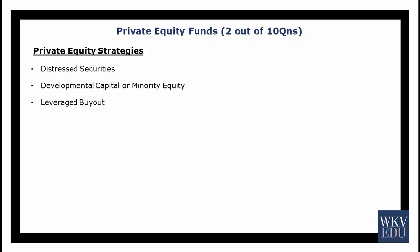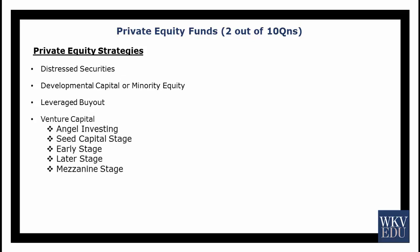Under venture capital, there are various stages of investment: angel investing, seed capital when the idea generates early funds, early-stage funds for developing and marketing, later-stage funds for commercial production and sale, and mezzanine stage funds needed for an FPO of shares. All these are private equity strategies where the managing partner tries to invest money and generate positive returns for the limited partners.